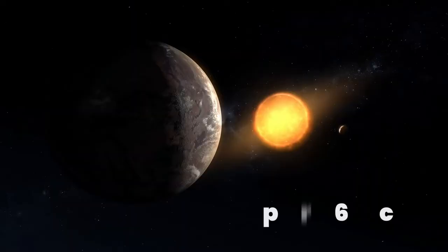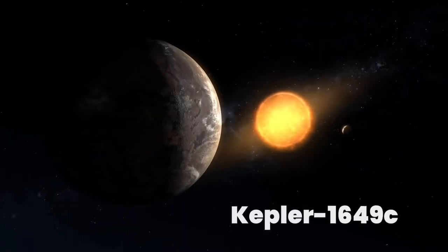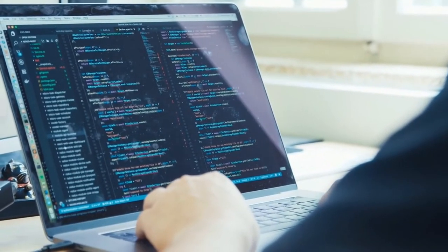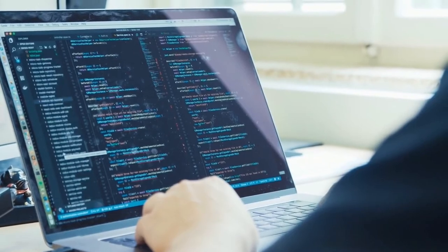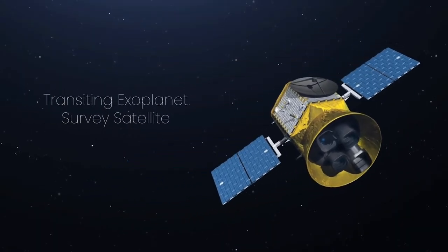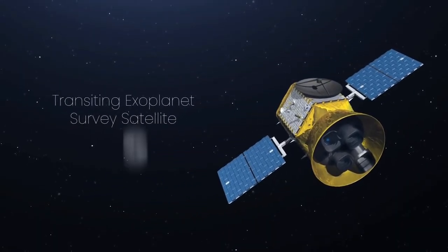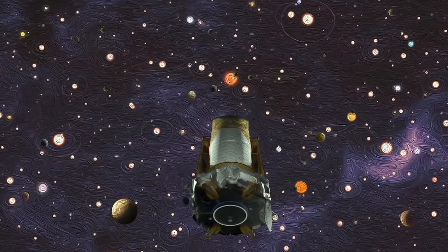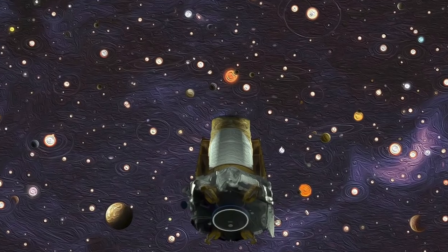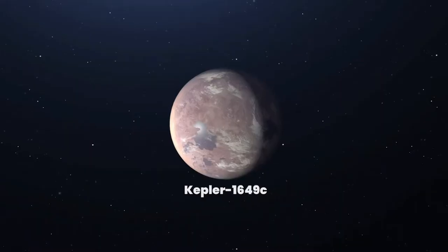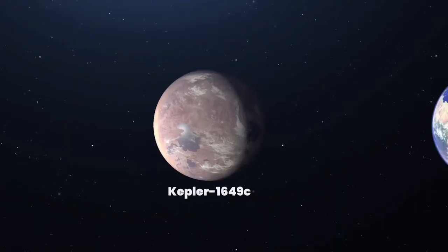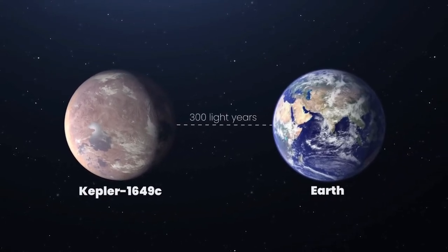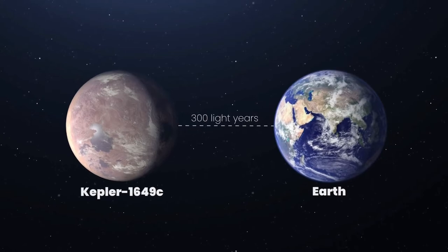One such planet is Kepler-1649c. In mid-2020, while combing through old Kepler data and matching it against new data from the Transiting Exoplanet Survey Satellite, astronomers confirmed the existence of another exoplanet with very favorable conditions. Kepler-1649c, located 300 light-years from Earth, is very similar to Earth in size and estimated temperature.